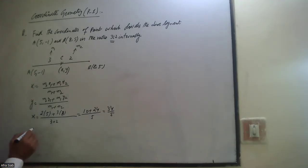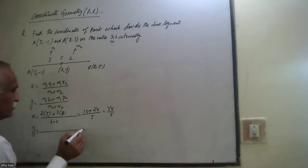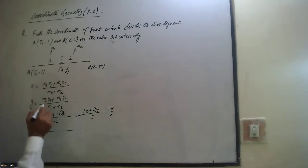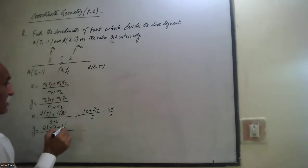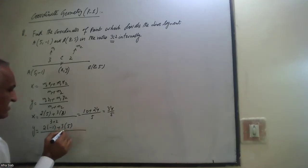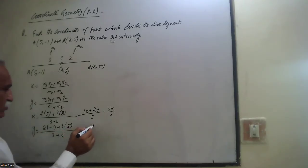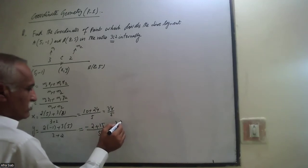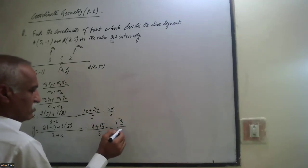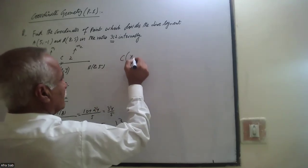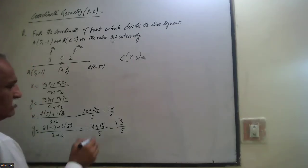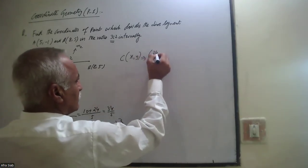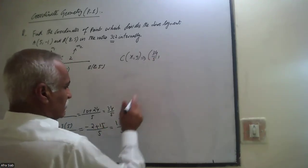Similarly, we can calculate the y-coordinate. m2, which is 2, multiplied by y1, which is -1, plus m1, which is 3, multiplied by y2, which is 5, divided by 3 plus 2. That gives us -2 plus 15 divided by 5, which is equal to 13 over 5. So the coordinates of C are (34/5, 13/5).